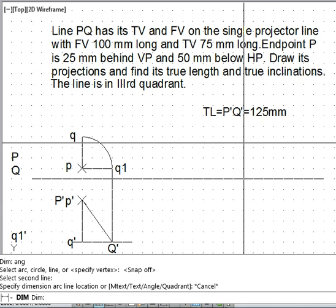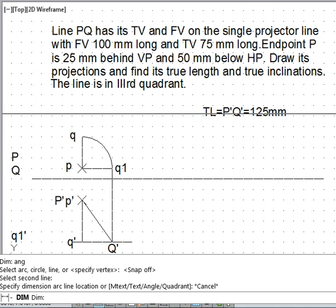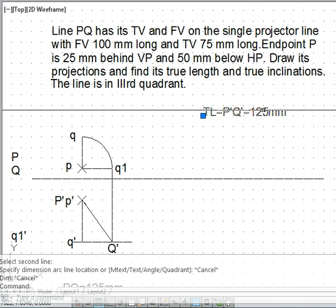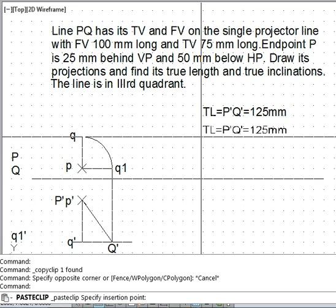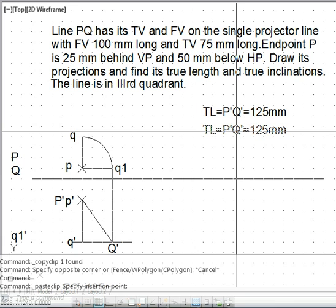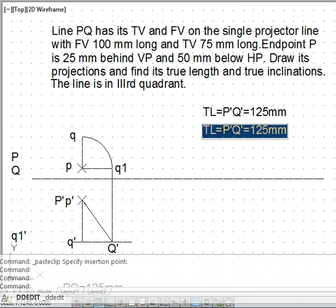That means we have here the theta equal to 53, so we will not need to again type d text, we simply copy whatever earlier text is.